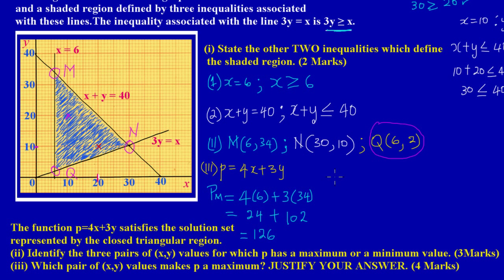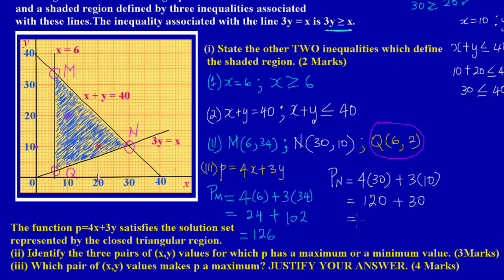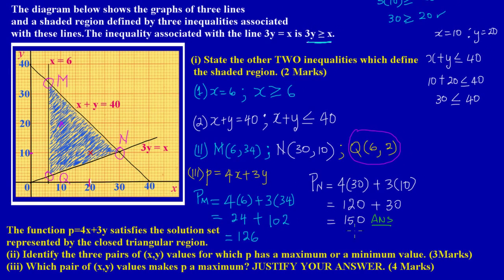Now let's check p(N). Substituting N's coordinates: p(N) = 4(30) + 3(10) = 120 + 30 = 150. By comparison, 150 is greater than 126, so p(N) gives us the higher value. Therefore the point N (30, 10) yields the highest value of p.